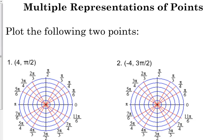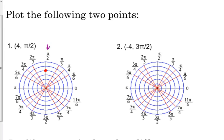Just like with angles, there could be multiple representations of the exact same point. For example, (4, π/2): π/2 starts right here, and a radius of 4 puts you right here. If we plot (-4, 3π/2), then 3π/2 is right here, and the negative radius sends us through the axis, so we end up in the exact same place.